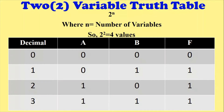There is also a decimal column. I am going to display that column so you can understand how to make different combinations of A and B. Decimal value starts from zero to three because according to the formula with two variables, two to the power two gives four values — starting from zero to three. To display decimal zero with two variables, you set A equals zero and B equals zero, which turns both values off. Zero means off, one means on.